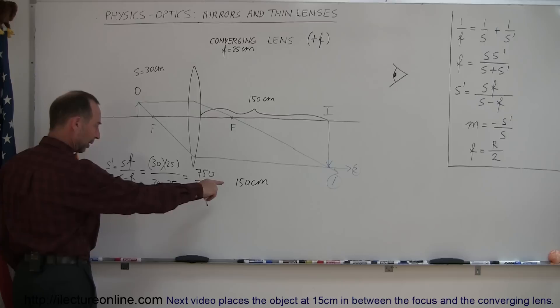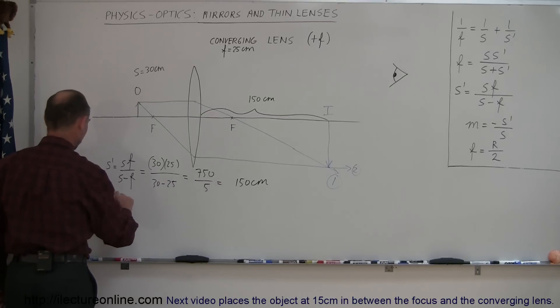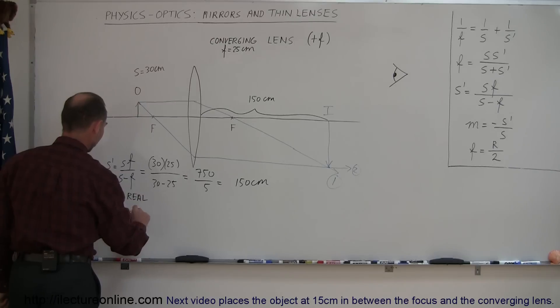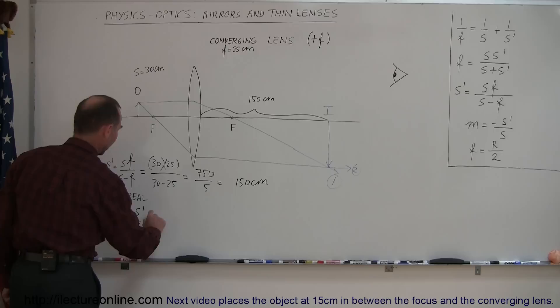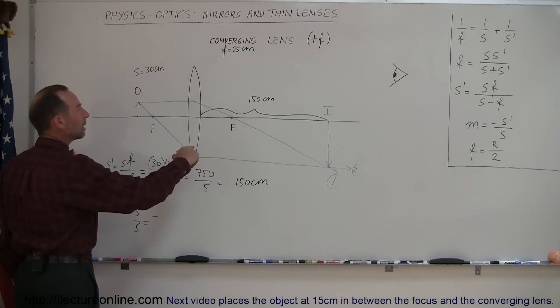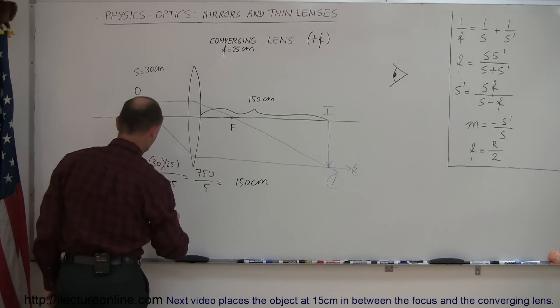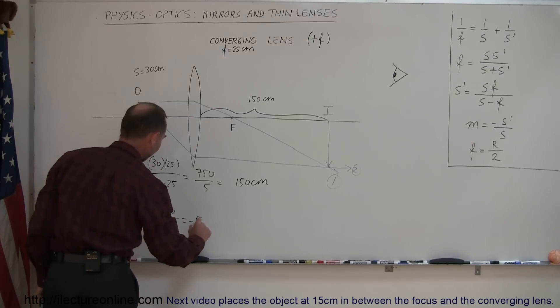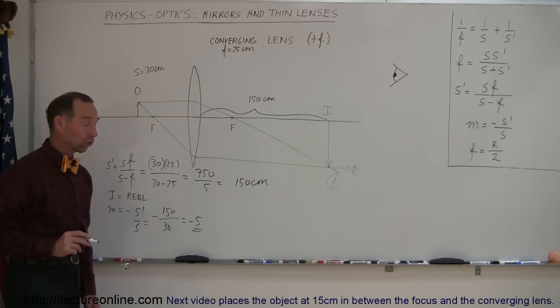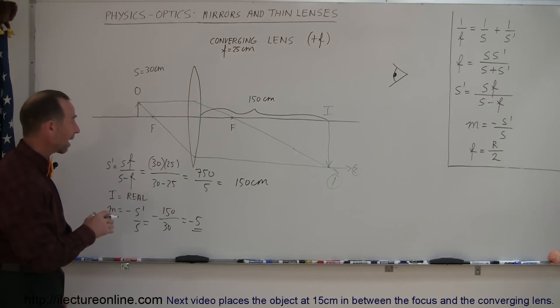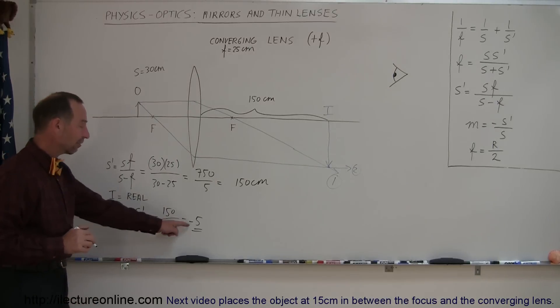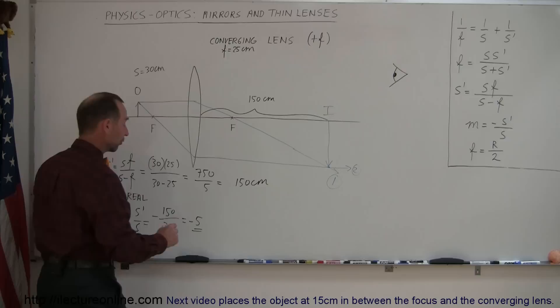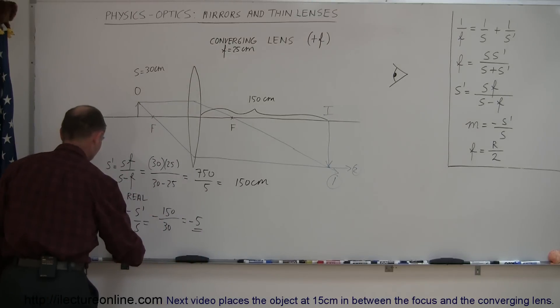M is equal to, and by the way, since that's positive, we can say that the image is real. The magnification is minus S prime over S, and the S prime, that would be the distance to the image, that would be positive 150, divided by the object distance, which is 30, so it would be minus 5. So you can see here the magnification is quite large. The image is five times the size of the object, and negative means that it's upside down or inverted, so we can write that the image is inverted.